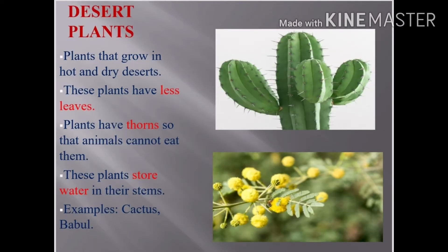First, let's talk about Desert Plants. Desert plants are the plants that grow in desert areas. These plants have less leaves and they have thorns. You can see the image on the screen — it is a cactus image. You can see some needle-like structures on it.